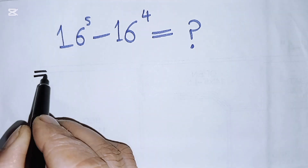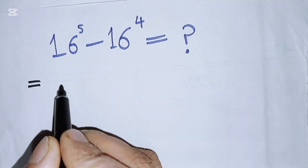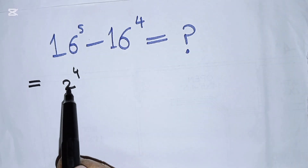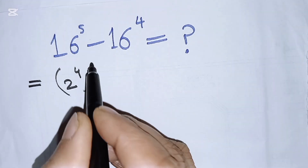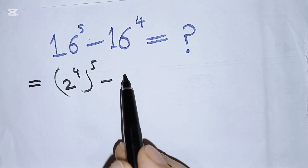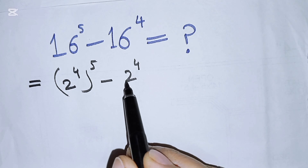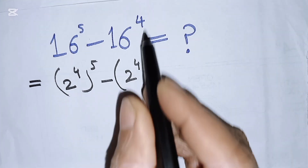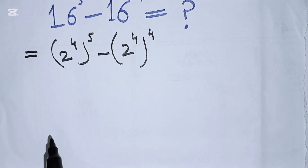First of all, 16 can be written as 2 to the power of 4, since 2 multiplied 4 times equals 16. So we rewrite the expression as (2^4)^5 minus (2^4)^4.